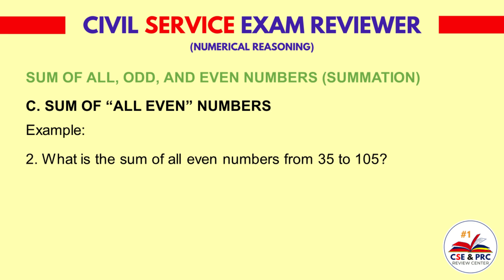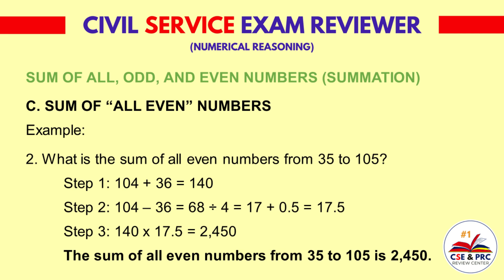Example 2: What is the sum of all even numbers from 10 to 50? Follow the same steps. Step 1: 50 plus 10 is equal to 60. Step 2: 50 minus 10 equals 40, divided by 4 equals 10, plus 0.5 equals 10.5. Step 3: 60 times 10.5 is equal to 630. The sum of all even numbers from 10 to 50 is 630.